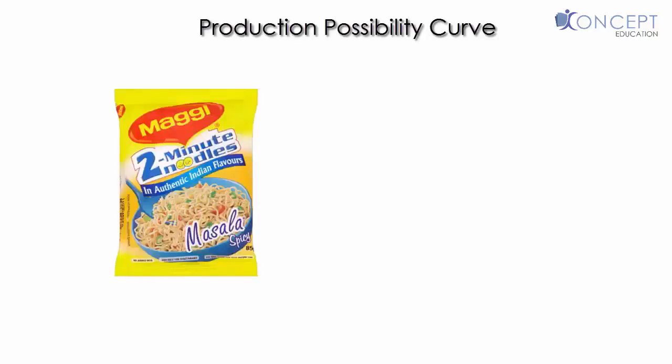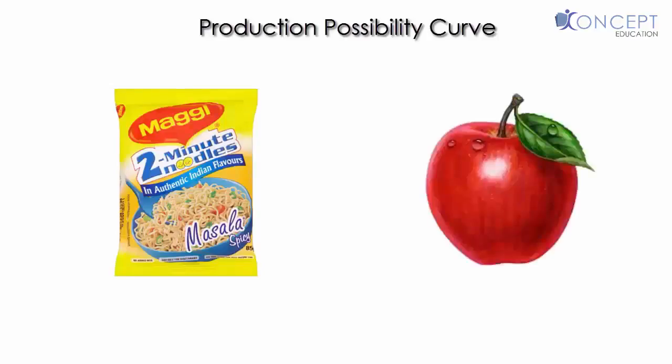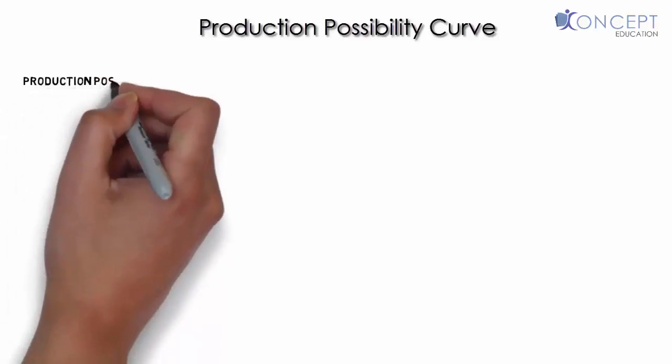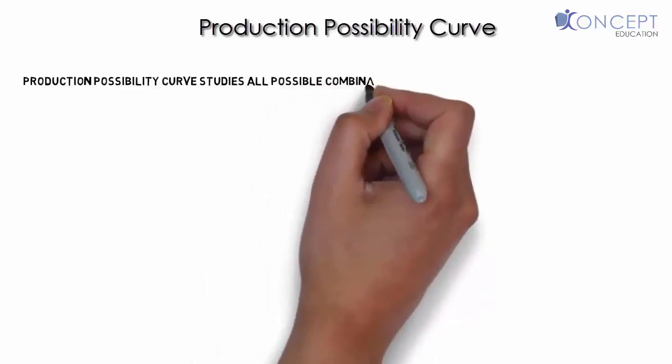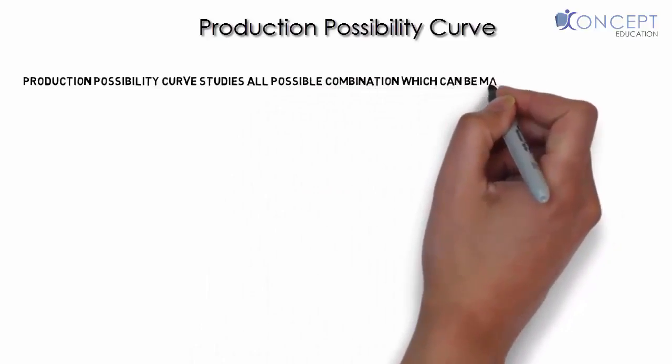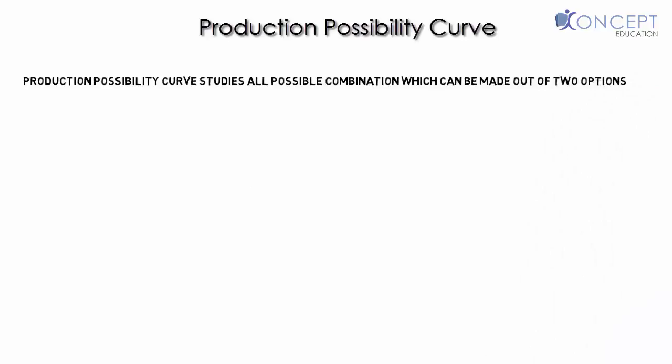The name of this topic is Production Possibility Curve. If we don't go too much in the details right now but just want to gauge an idea of what it deals with, let's do it with an example. Suppose you are really very hungry and there are two options.